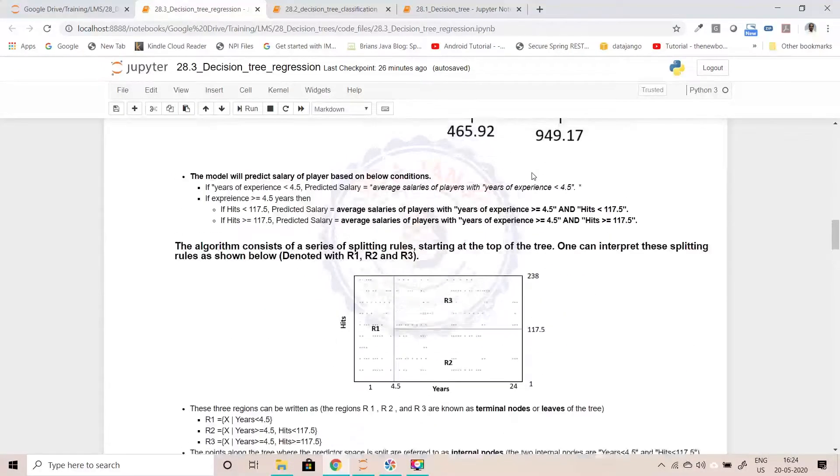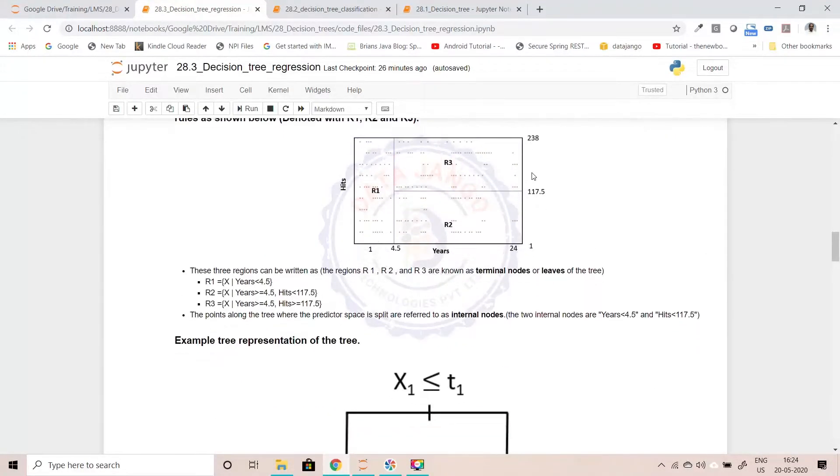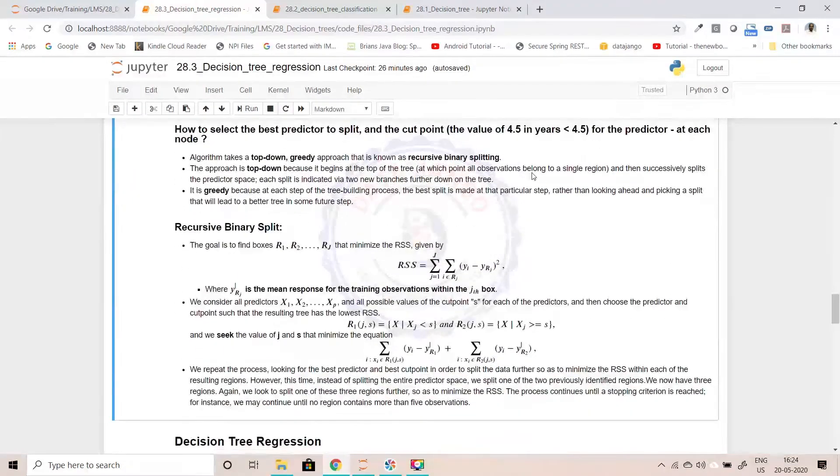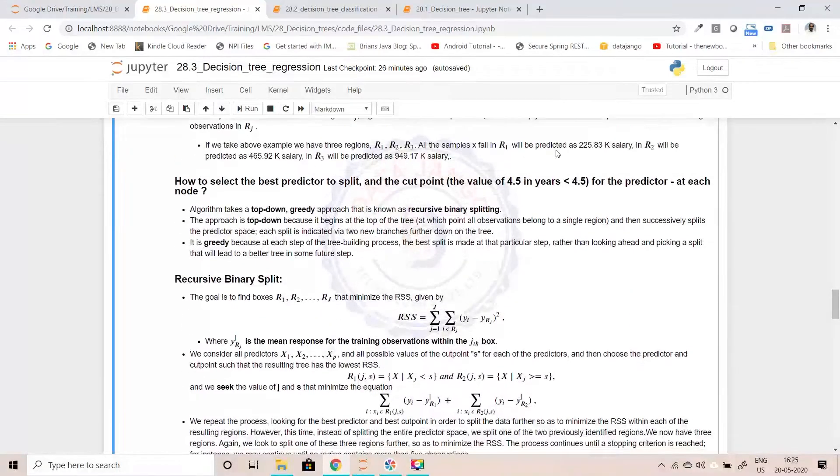The second column in this data set is hits. And hits also it takes different cut points and calculates RSS again. So wherever it gets the best RSS, it keeps that aside. And then compares the years cut point, best years cut point and the best hits cut point, looks at the RSS, whichever is less, it chooses that as the best feature and that as the best cut point. So that's how it knows.